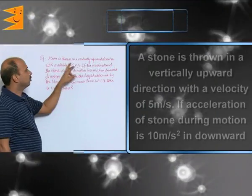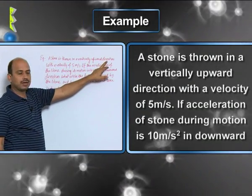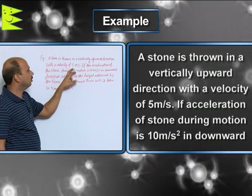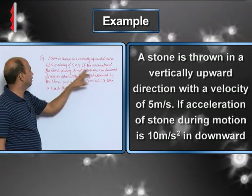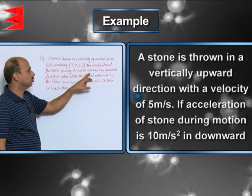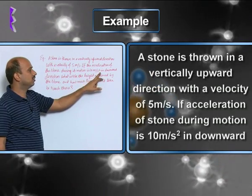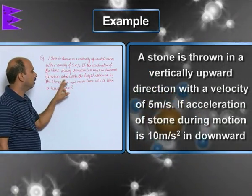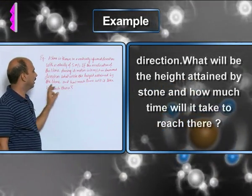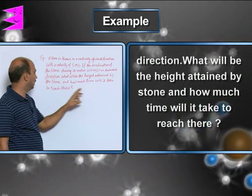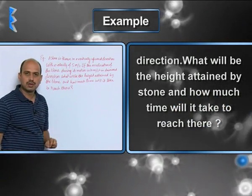See this example: a stone is thrown in a vertical upward direction with a velocity of 5 meter per second. If the acceleration of the stone during its motion is 10 meter per second square in downward direction, what will be the height attained by the stone and how much time will it take to reach there?